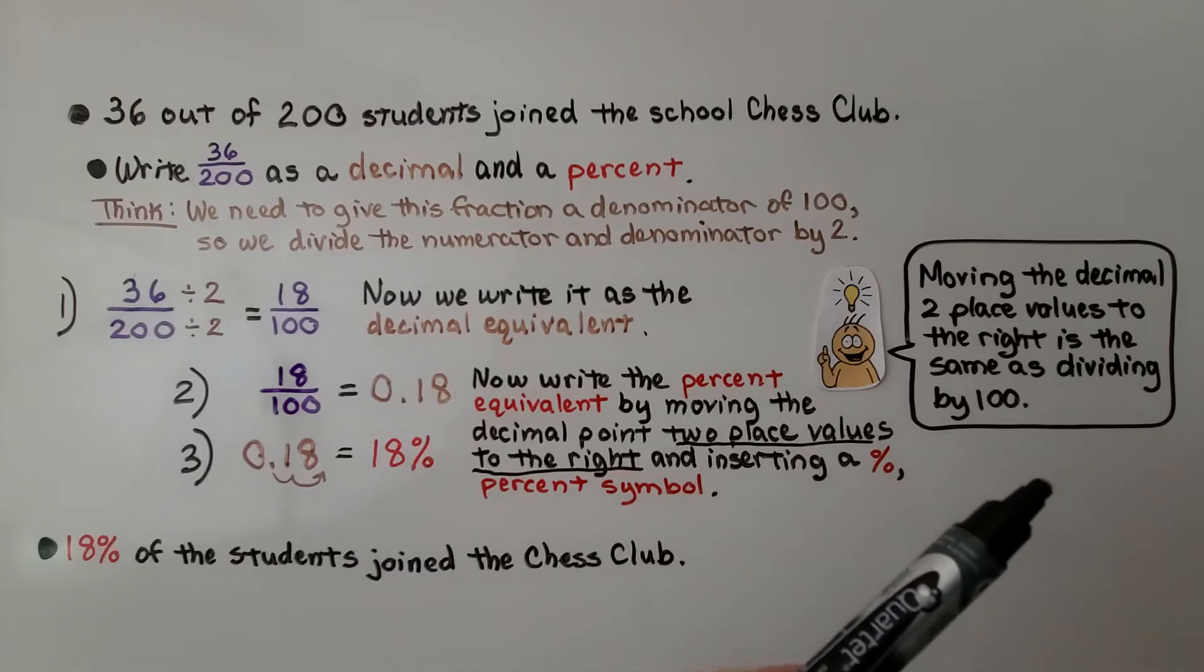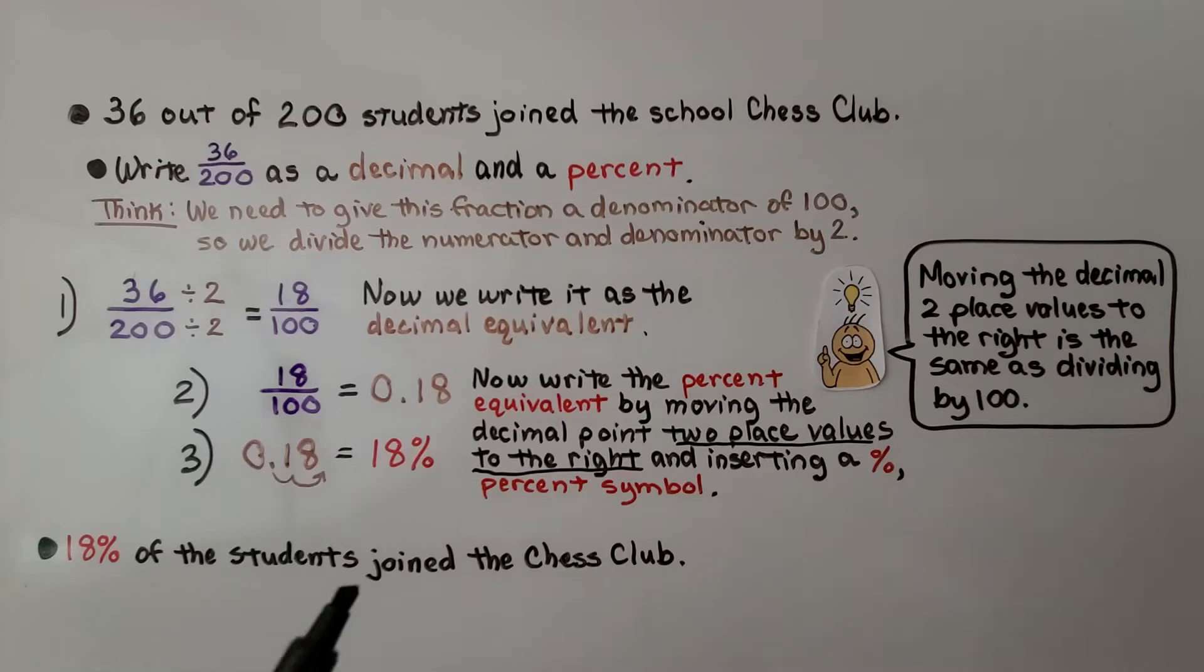Moving the decimal two place values to the right is the same as dividing by 100. We know 18 percent of the students joined the chess club. The 36 out of 200 students would be 18 percent.